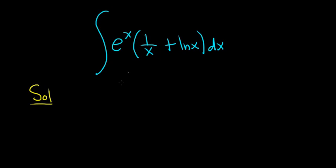I'm thinking we can rewrite this as follows. Maybe distribute the e^x. So we have e^x times 1/x plus e^x times ln x. Now we have two terms and it kind of looks like a product rule from calculus.